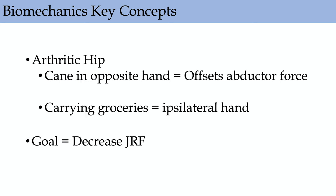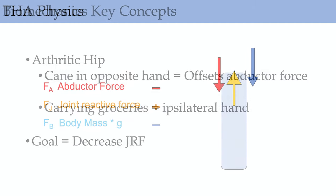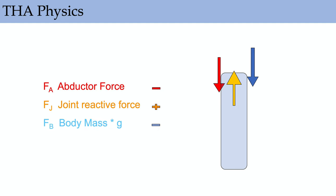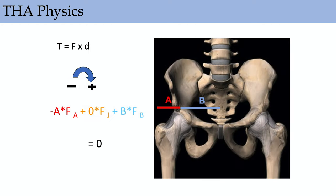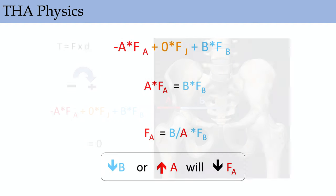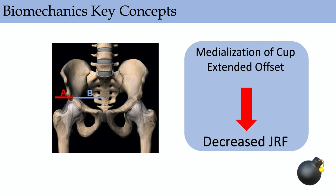Biomechanical concepts: if the patient uses a cane, they use it in the opposite hand to offset the abductor force. If they're carrying groceries, they carry them on the ipsilateral side. The goal is to decrease joint reactive forces. There's a normal force upward, your joint reactive force, and your abductor force and body mass pointed downward — these forces must equal zero for a stable hip. To decrease joint reactive forces, you decrease B or increase A, meaning you medialize the cup or extend the offset.